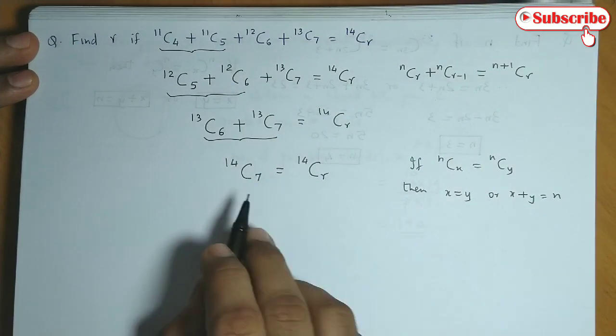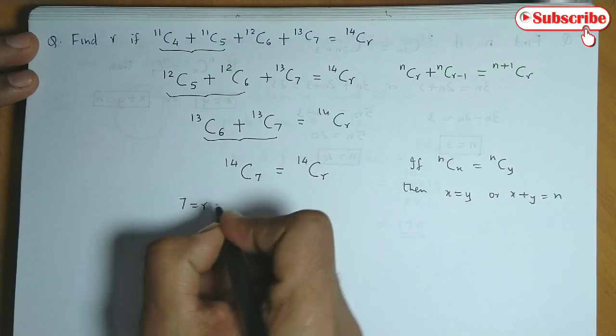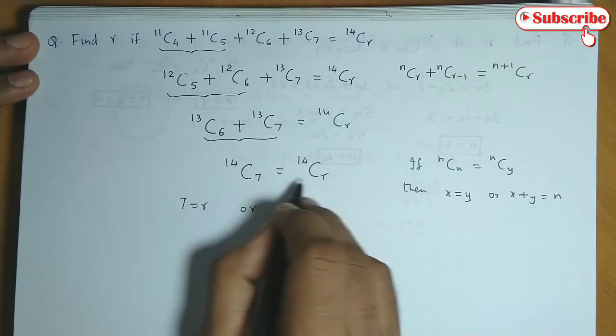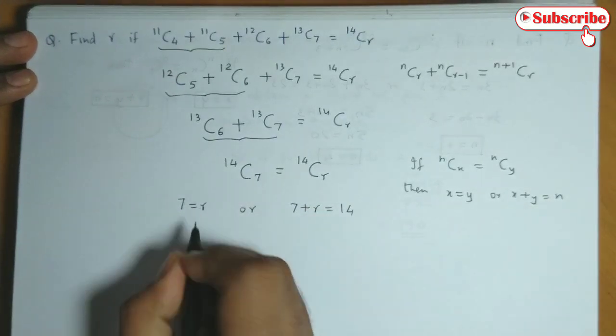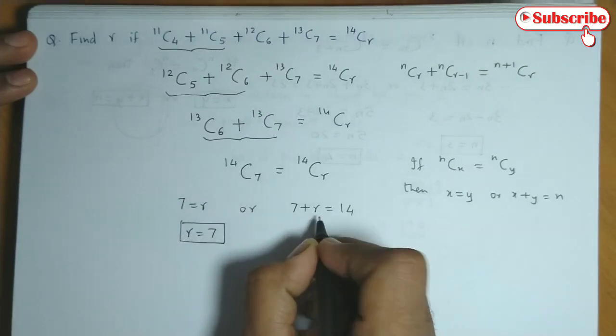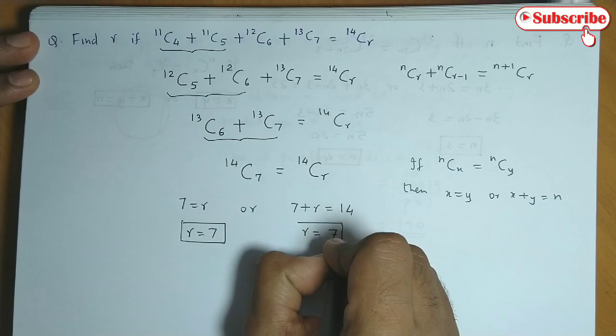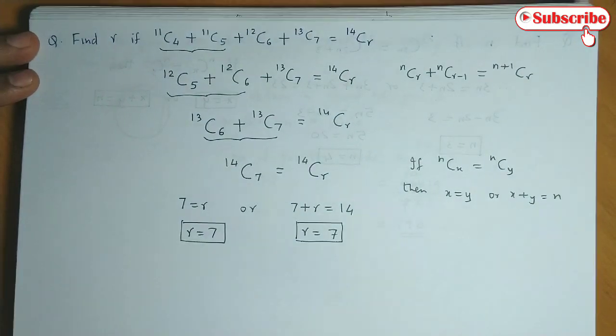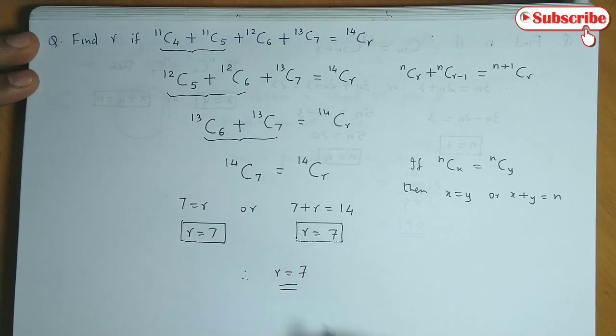So using this we have 7 equals R, or 7 plus R equals 14. So we obtain the value of R as 7. And here as well we obtain the value of R as 7. So finally we could say the value of R is 7.